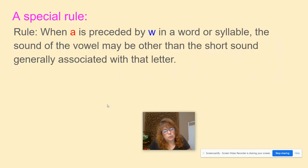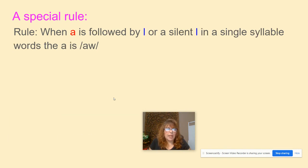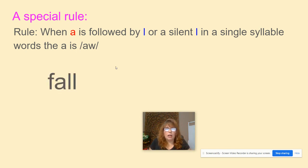Again, we're going to review our special rule for the A. When the A is preceded by the W in a word or syllable, the sound of the vowel may be other than the short sound generally associated with that letter. For example: want, wash, wasp. Now, when the A is followed by the L or a silent L in a single syllable, the words that have that A are going to make an AW sound: fall, tall, haul.